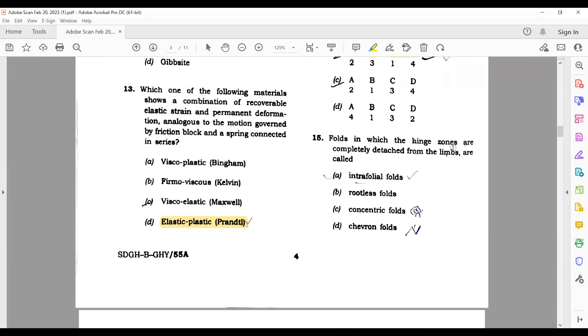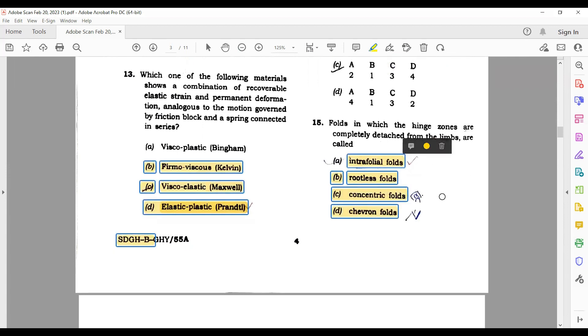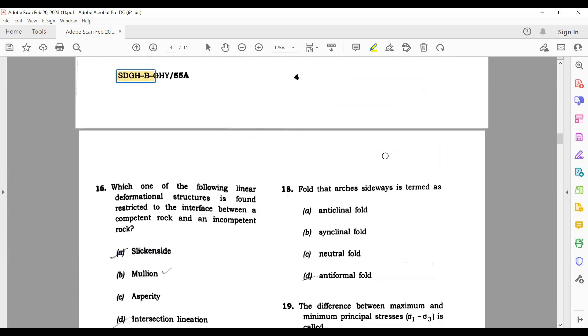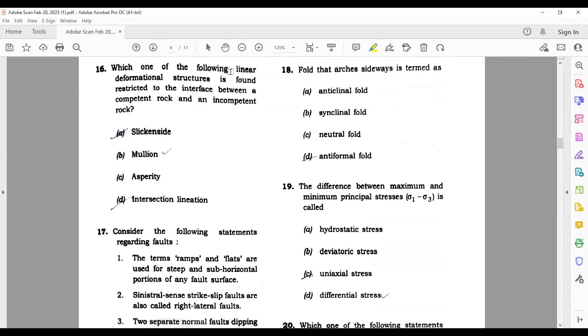Fold in which the hinge zones are completely detached from the limbs are called intrafolial folds. So Chevron has drawn like this, concentric is like this. So correct option is your intrafolial folds. Which one of the following linear deformation structure is found restricted to the interface between a competent rock and an incompetent rock? It is mullion.